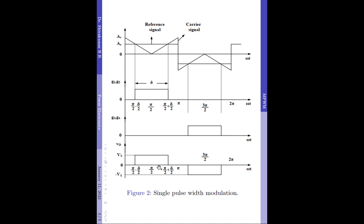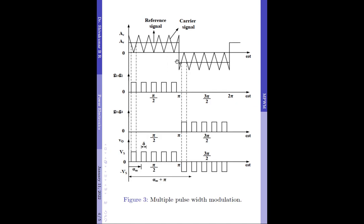This is the topic of discussion for this video. These are the waveforms for the Multiple Pulse Width Modulation Technique. The generation of gating signals using a Multiple Pulse Width Modulation Technique is very similar to that of a Single Pulse Width Modulation Technique. Once again, we will be comparing a Rectangular Reference Signal with frequency Fr against a Triangular Carrier Signal with frequency Fc. The main difference is that in Multiple Pulse Width Modulation, the carrier signal frequency is greater than the reference signal frequency, as you can notice in the waveform shown here, where the carrier signal has more cycles per one cycle of the reference signal.